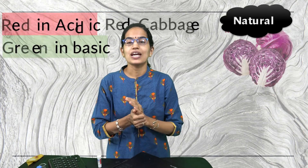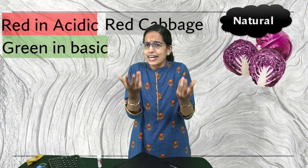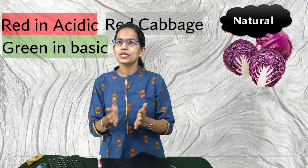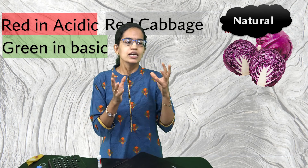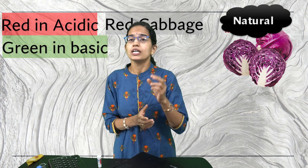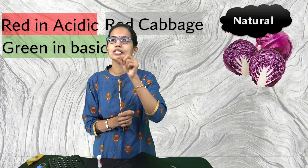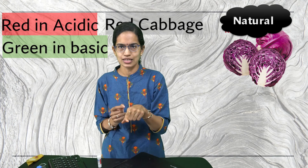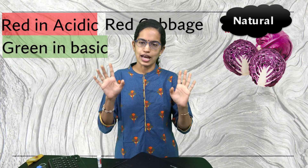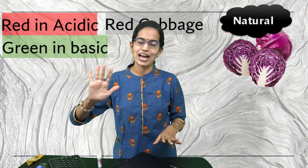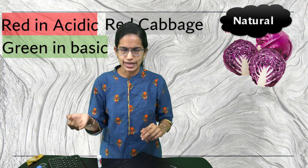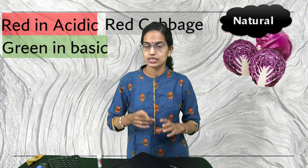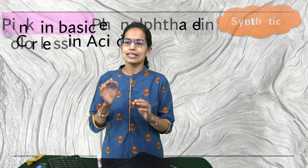The next indicator is red cabbage, which you might have enjoyed as a vegetable. Red cabbage is a very good indicator — its juice is purple in color. If dipped in an acidic solution it gives red color, and if dipped in a basic solution it gives green color. So we have now discussed four natural indicators: litmus, turmeric, china rose, and red cabbage.